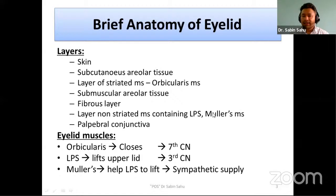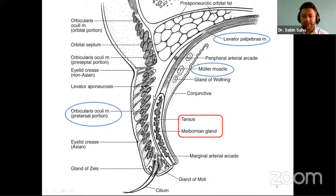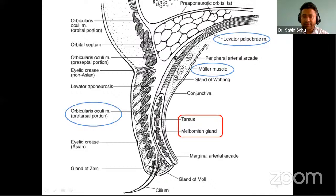Starting with the anatomy of the eyelid: the eyelid consists of seven layers, starting from the outermost part, skin, to the innermost part, palpebral conjunctiva. The layers are skin, subcutaneous areolar tissue, striated muscle layer (orbicularis muscle), a muscular layer, followed by the fibrous layer. The fibrous layer consists of the tarsal plate, then the layer of unstriated muscle consisting of levator palpebrae superioris and Müller's muscle, and at the end, the palpebral conjunctiva.